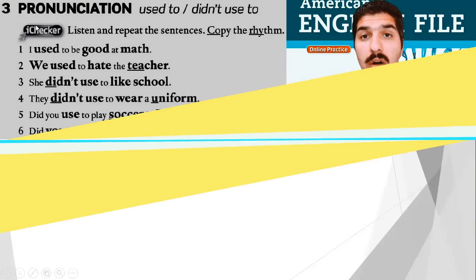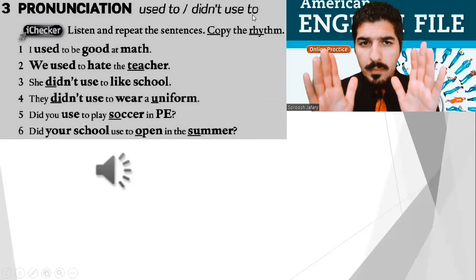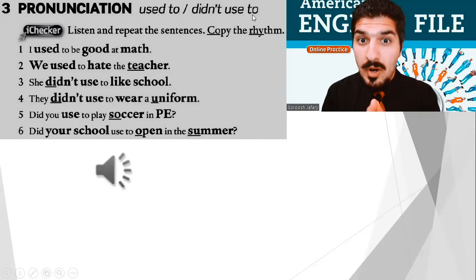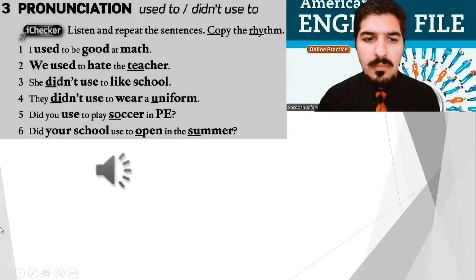Part 3: Pronunciation — used to, didn't use to. Do you remember? We don't say 'used to' — we say 'used to.' Didn't use to. Everybody, listen and repeat. Copy the rhythm. Let's do it.